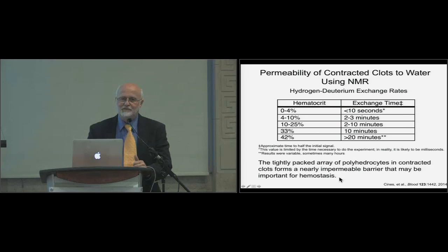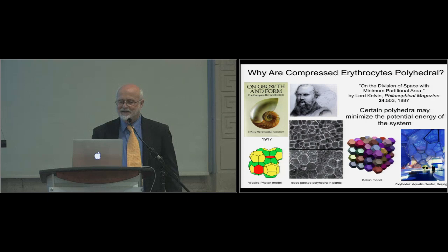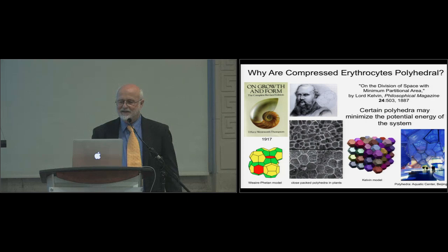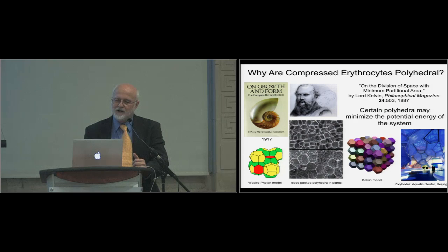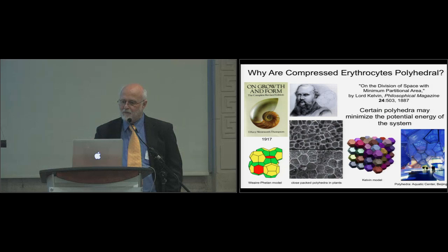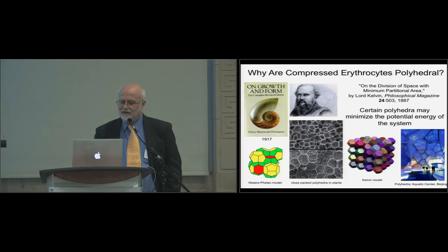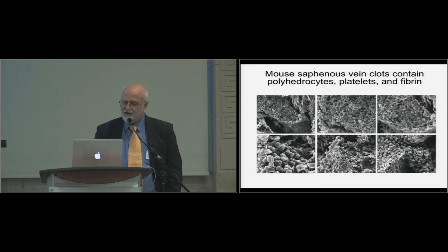When we look at a contracted clot, the outside shows a dense meshwork of fibrin and platelets, while the interior is mostly red blood cells that have taken on a polyhedral form — densely packed polyhedra. We've named these 'polyhedrocytes.' These structures are highly impermeable by NMR hydrogen-deuterium exchange measurements. Red blood cells may become polyhedral because — as Lord Kelvin derived mathematically — this is the structure for division of space with minimal surface area, minimizing the potential energy of the system. Similar polyhedral cells are seen in plant parenchyma. In a mouse saphenous vein model, we see the same structures in vivo.